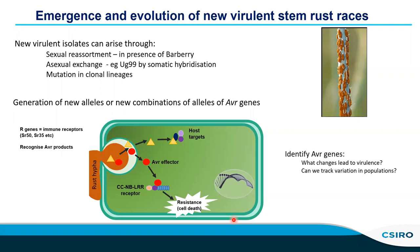What we want to do is identify what some of these avirulence gene products are, how they're recognized, what changes in those genes lead to virulence, and how we can track that variation in populations of stem rust.